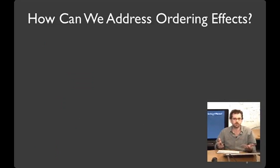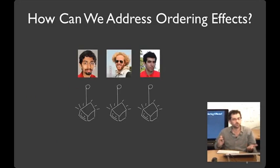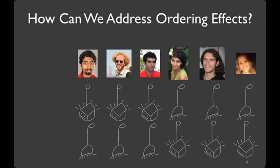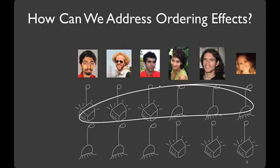Well, how might we address these ordering effects? Well, one thing that we could do is we could take half the people and have them try one interface first, and the other half and try the other interface first. Counterbalancing has a couple of nice properties. For starters, you can treat it as completely a between-subjects design if you look at only the first task that people do.